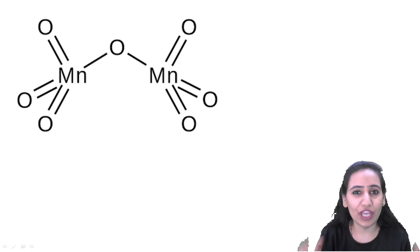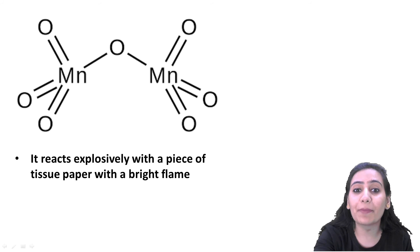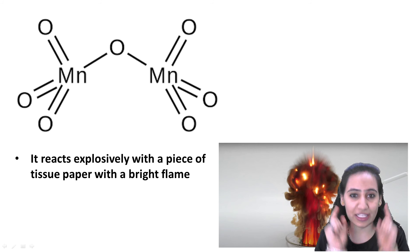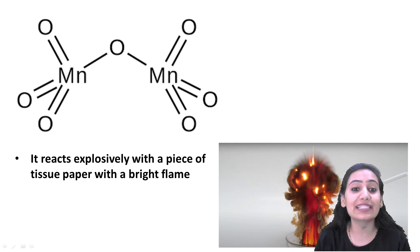When this oxygen is released and reacts with a combustible compound or substance, an explosion happens. So this is an explosive compound, Mn2O7.